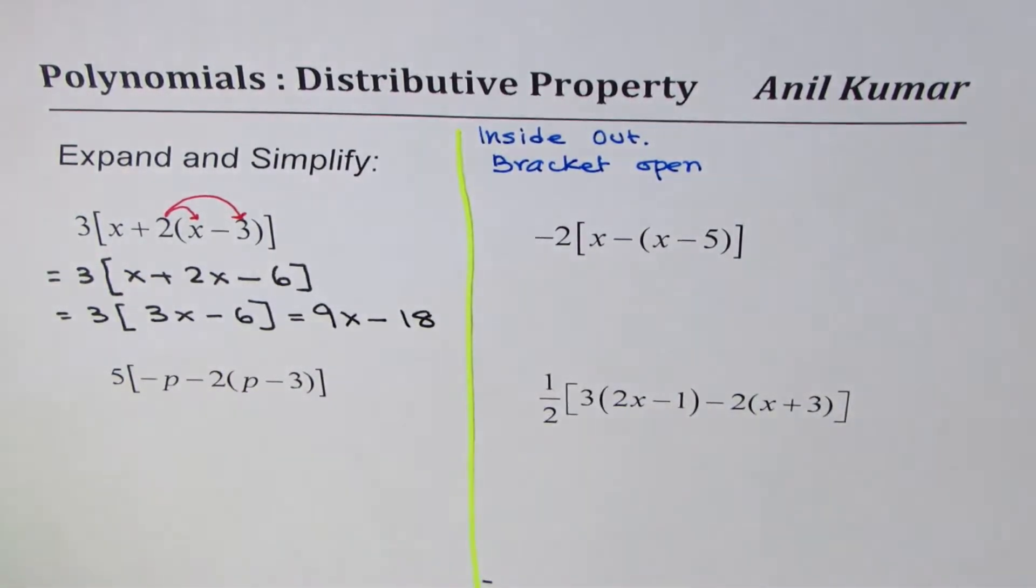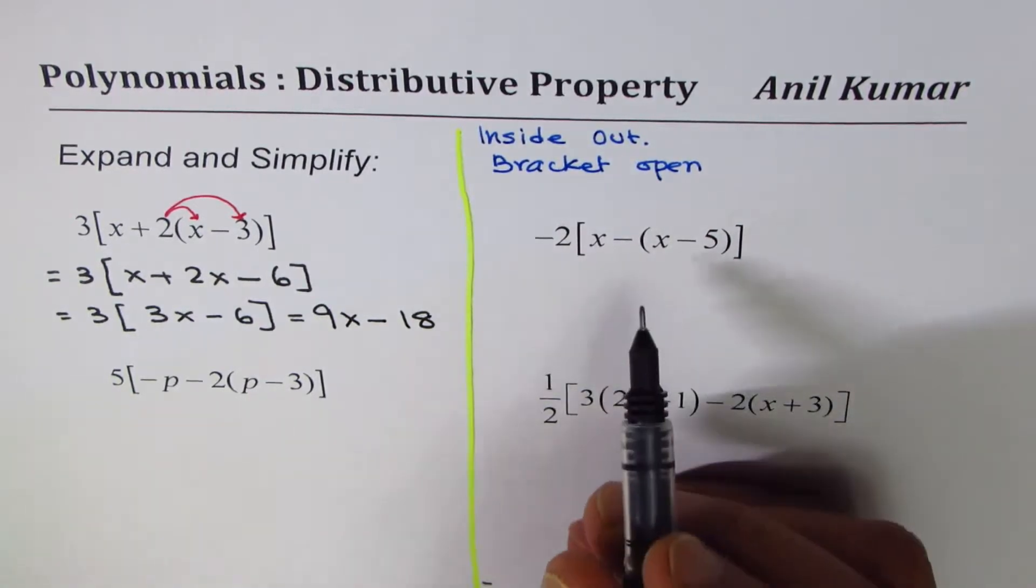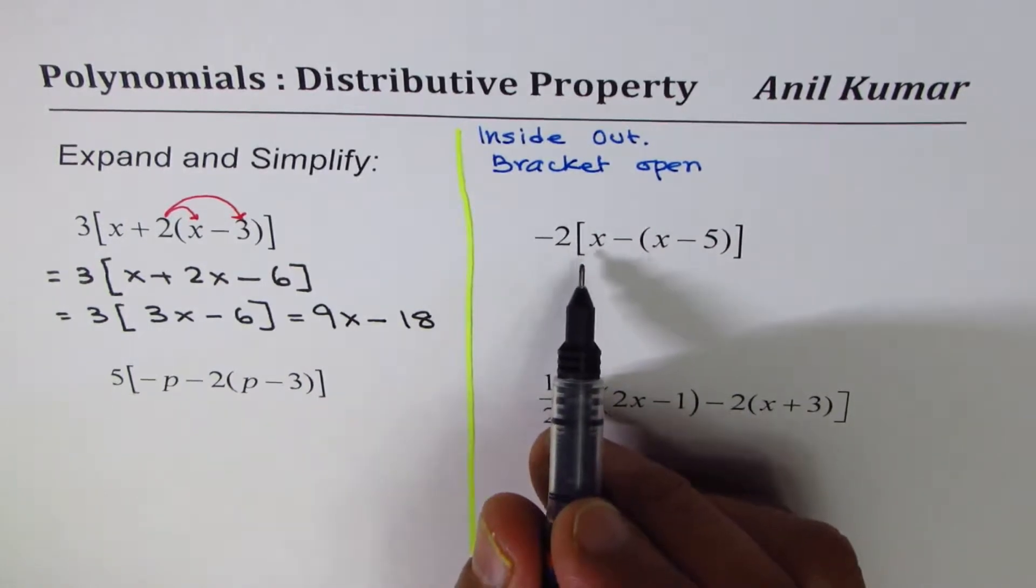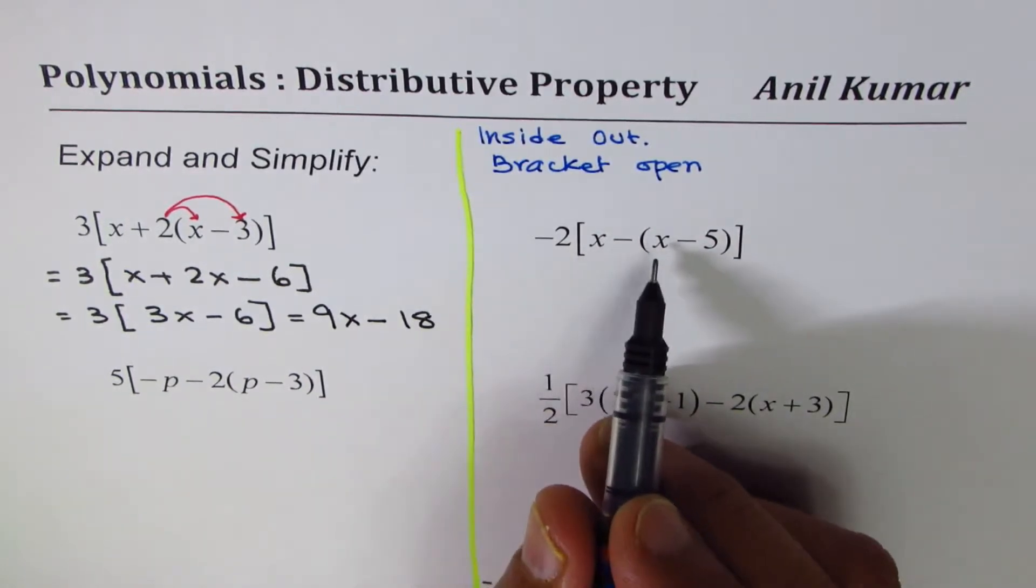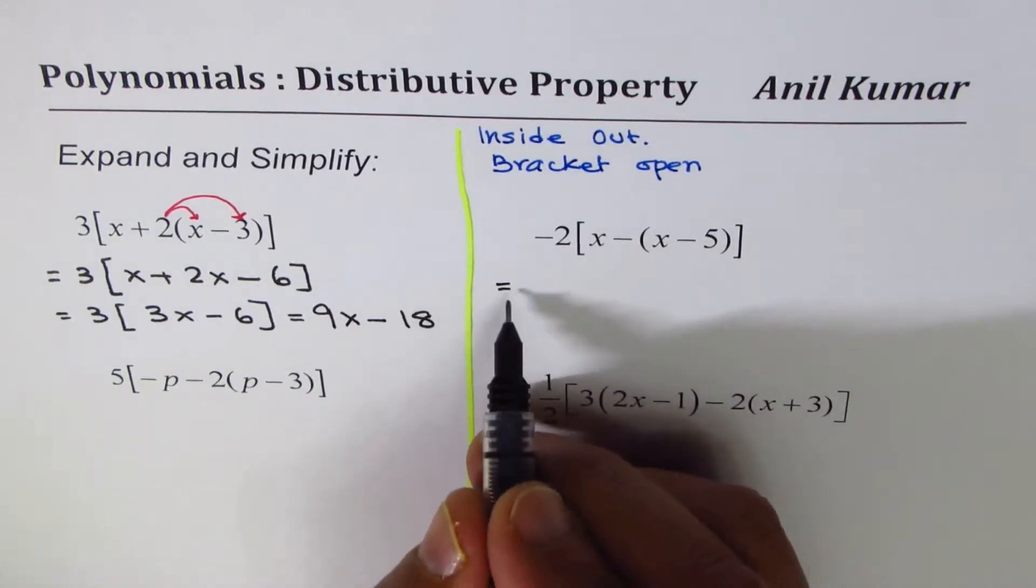That is how we should be solving them. Now the next one here is minus 2 times within bracket x within bracket x minus x minus 5. So we'll begin by writing equal to minus 2 within bracket x...